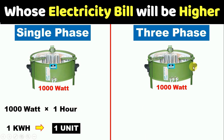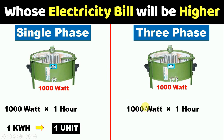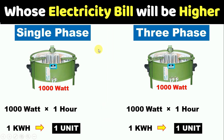Now let us come to three phase. The same thing applies here. The equipment is a heater of the same rating as the single phase equipment. When we keep this 1000 watt three phase heater on for one hour, the energy consumption is also one kilowatt hour — that is, one unit is consumed. If the load is the same for both, then energy consumption is also the same in both conditions.